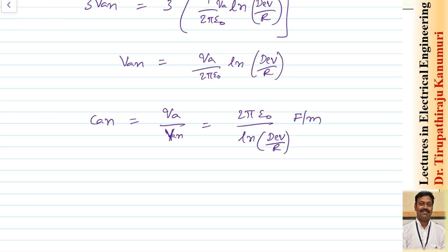Similarly, C_BN and C_CN can be calculated the same way. Since the system is transposed, all are equal: C_AN = C_BN = C_CN. Note that in the denominator, D_eq is the GMD, and the denominator uses R (the physical radius), not R' (the geometric mean radius used in inductance). This is the key difference between inductance and capacitance calculations — capacitance starts from the conductor surface, so there are no internal flux linkages.